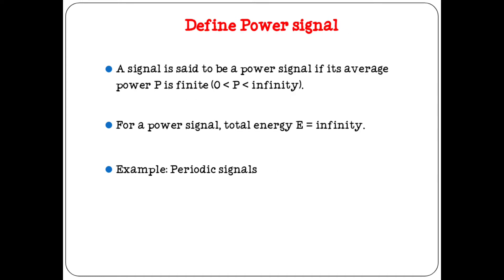A signal is said to be a power signal if the average power is finite and energy is infinite. The value of energy is equal to infinity. Example: periodic signals.